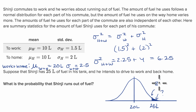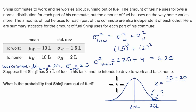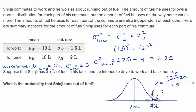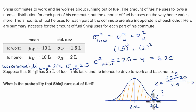The z-score is equal to 25 minus the mean of 20, divided by the standard deviation of 2.5. This is 2 standard deviations above the mean, a z-score of plus 2. Looking at the z-table at exactly 2 standard deviations above the mean gives the cumulative area below that point. Subtracting that from 1 will give us the area we care about — the probability that Shinji runs out of fuel.